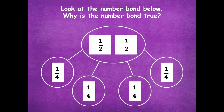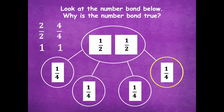So let's look at the number bond below. Why is the number bond true? We have one half and one half in the whole, and then four unit fractions of one fourth. How many halves do I have? Two halves — and two halves is one whole. Then looking at the parts: one fourth, two fourths, three fourths, four fourths. Four fourths equals one. So two halves equals four fourths because they're both labeling one whole.